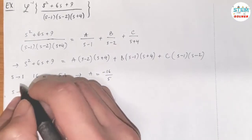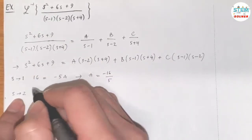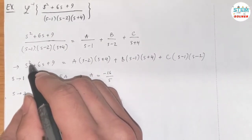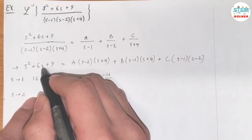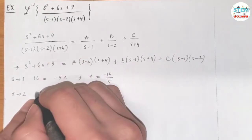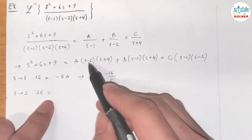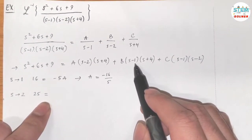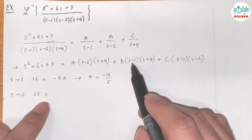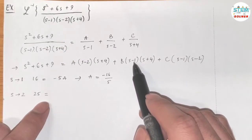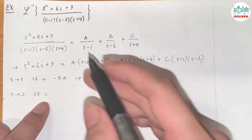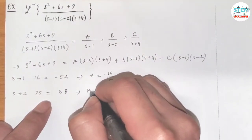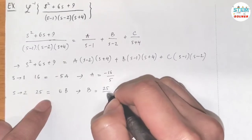Now I'm going to do the same thing. Let x approach 2. On the left side, I have 2², which is 4, plus 12, which is 16, so 25. On the right side, this is gone, this is gone. 2 minus 1 is 1, times 6 is 6. Then I have B equals 25 over 6.